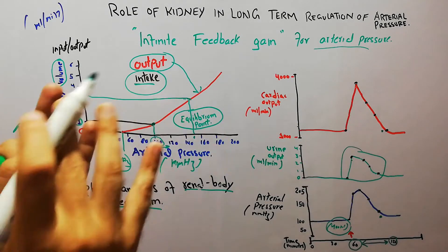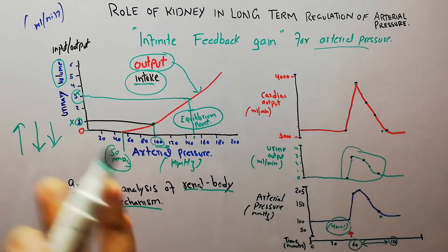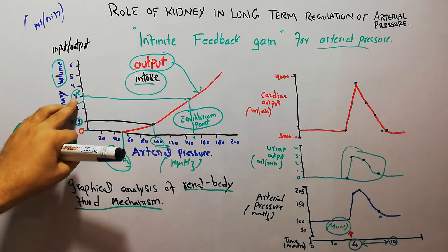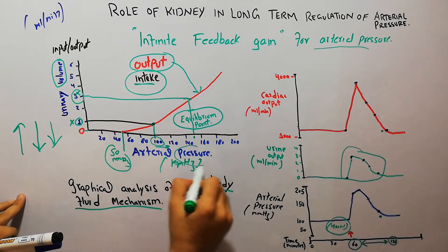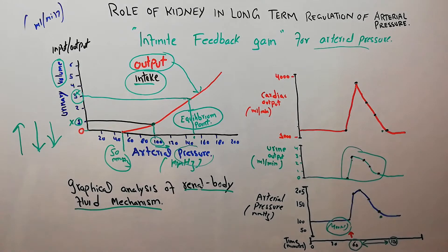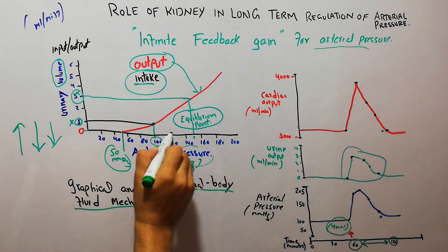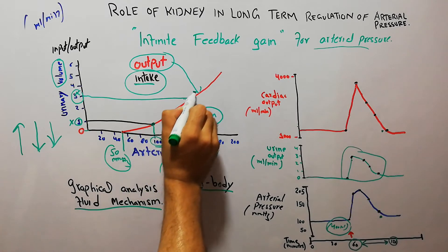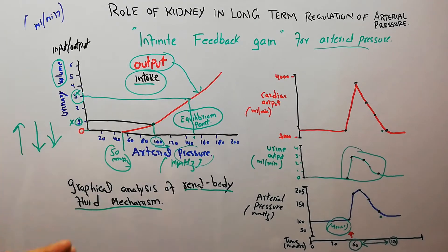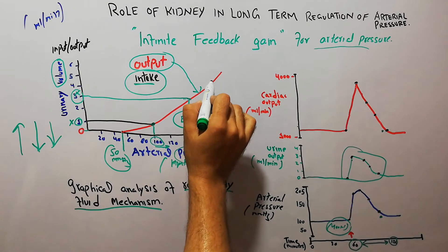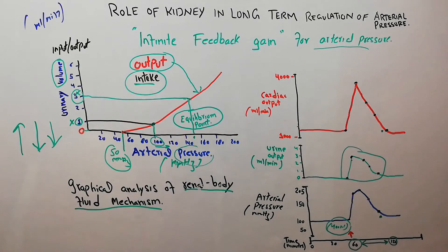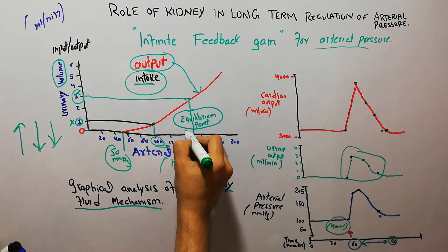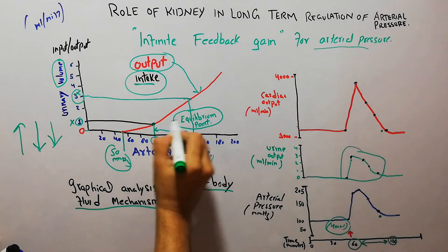A lot of fluid is going out of the body. The purpose of this increased output — this 3x increased output — is to bring back the arterial pressure to the normal equilibrium point. The increased renal output serves to return the arterial pressure to this equilibrium point.